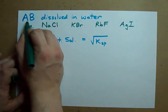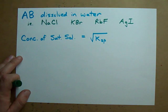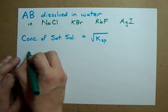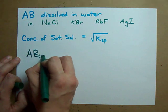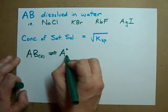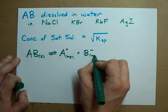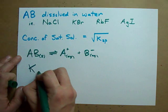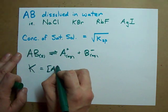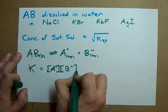When you dissolve a compound AB in solution, for example NaCl or AgI, then what you get is that solid dissolving into your A ion aqueous and your B ion aqueous.